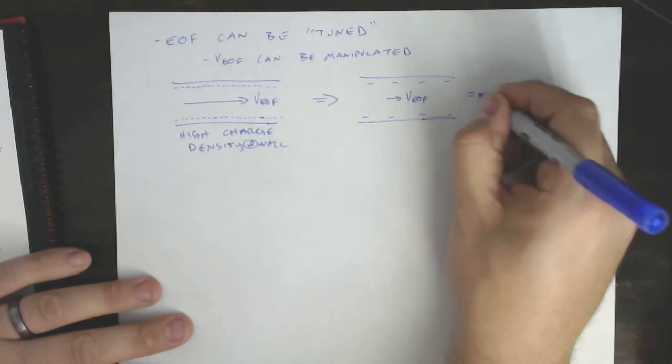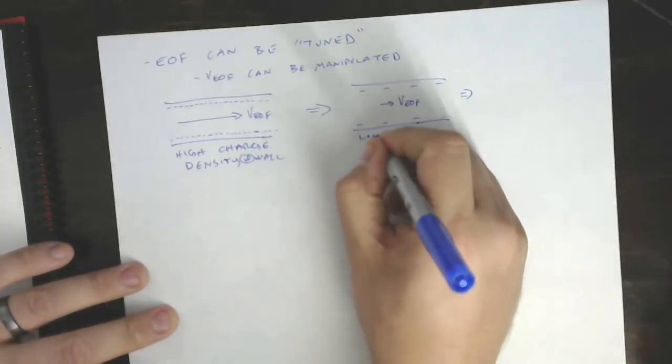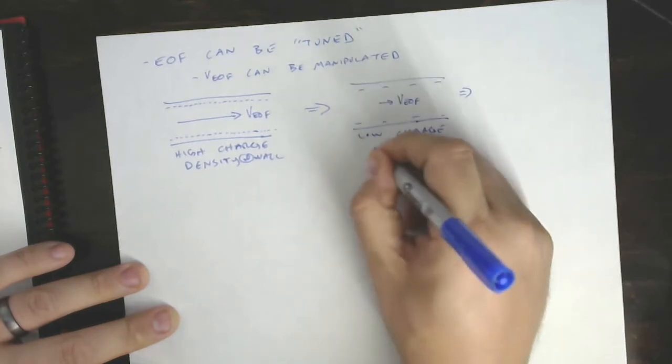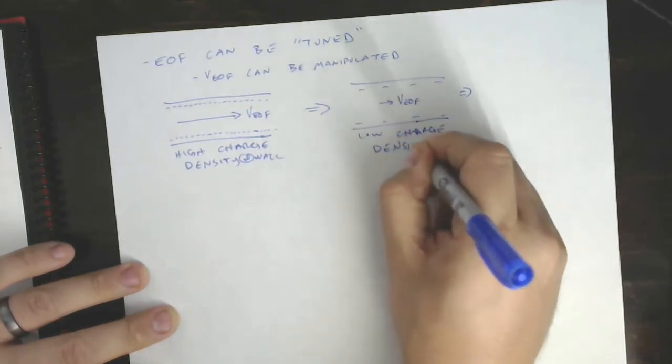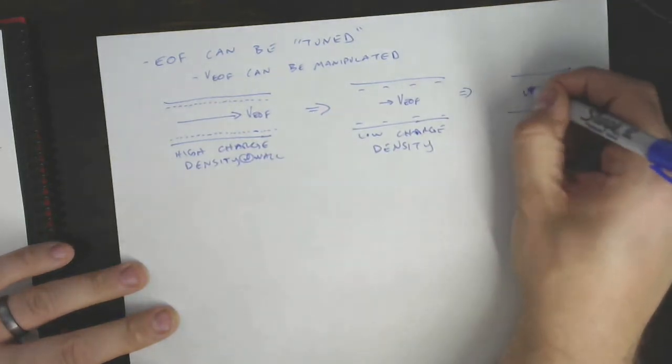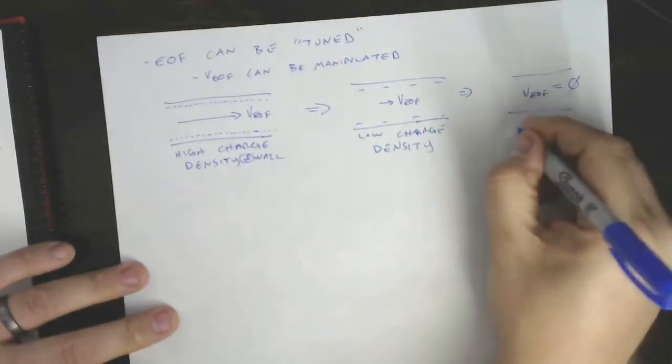In fact, we can take this to its logical conclusion, which is to say, so let's call this low charge density. Its logical conclusion would be to say there's no charge, and in that case V_EOF would be equal to zero. So this is with no charge.